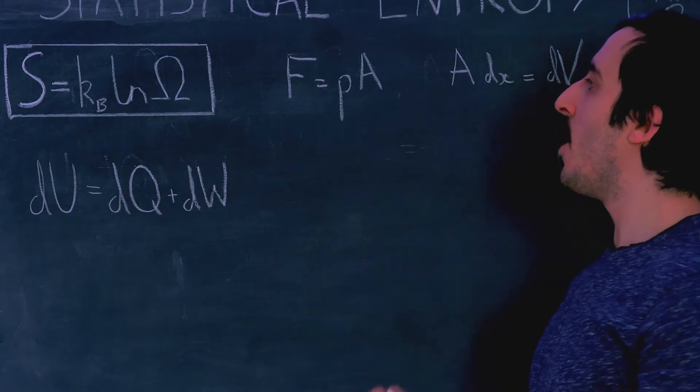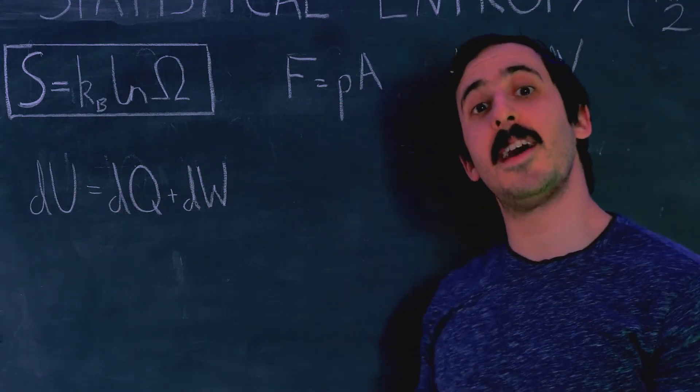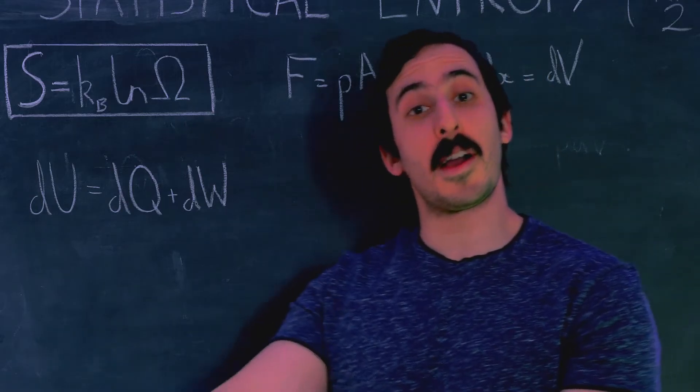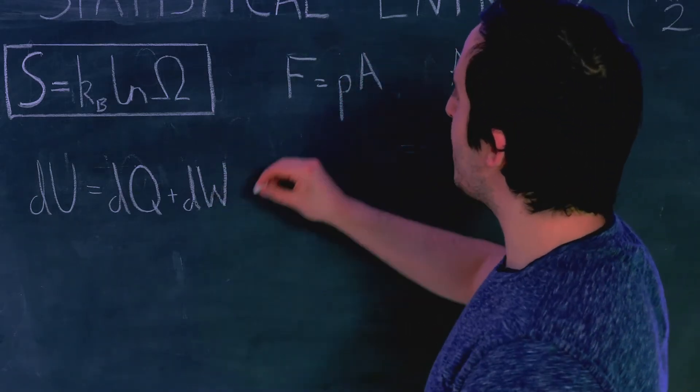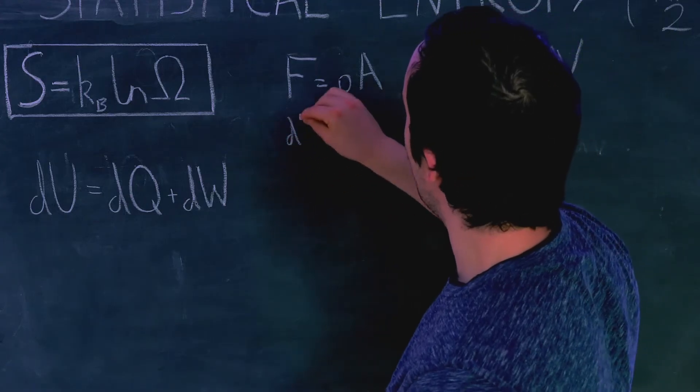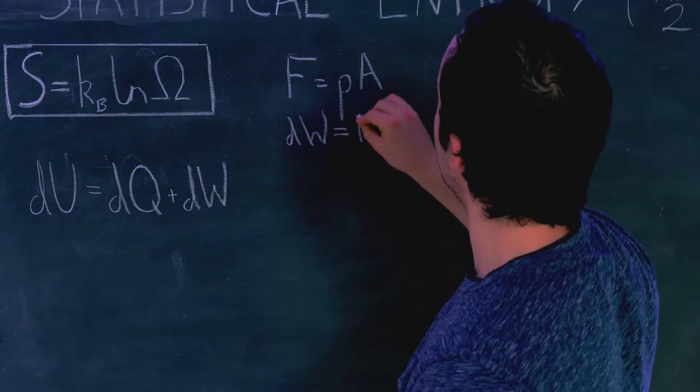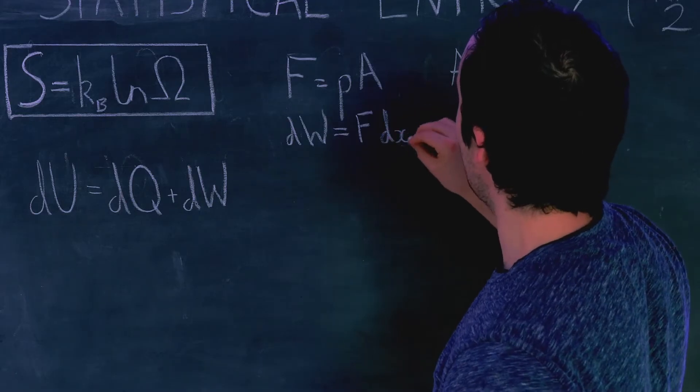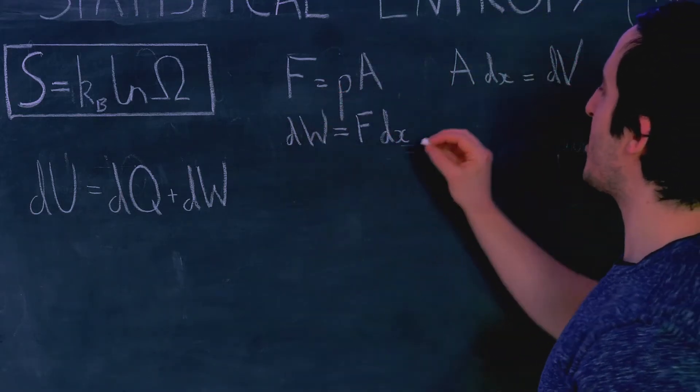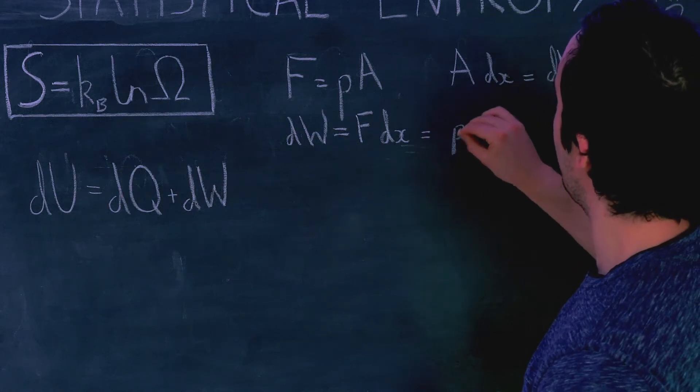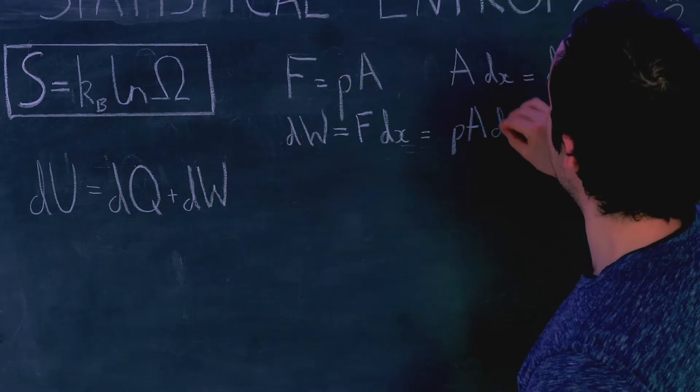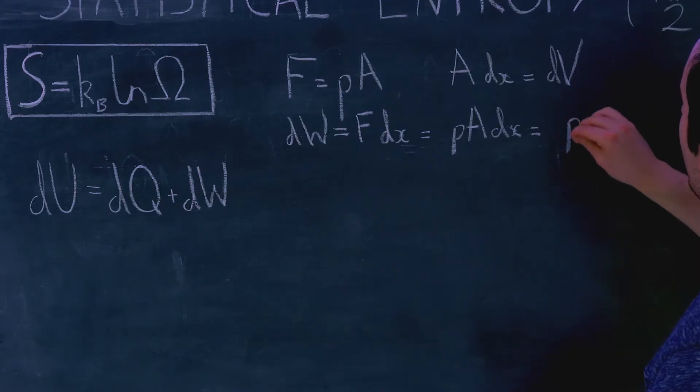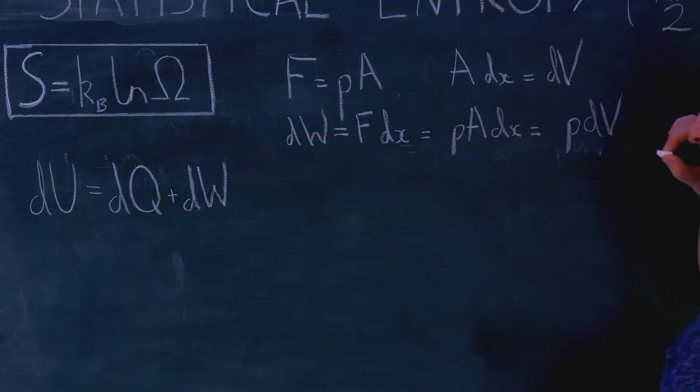Okay now what is work done? Well work done is force times distance. If I apply a force over a certain amount of distance then that is equal to the work I am doing. So to work out an infinitesimal bit of work dW what I have to do is take my force and apply that force over some small distance dx and what is force? Well force is pressure times area so this is equal to P A dx and A dx is equal to dV so this is equal to P dV.